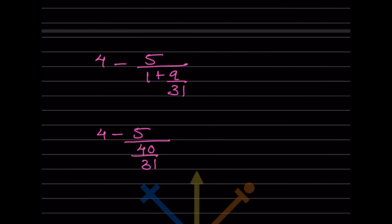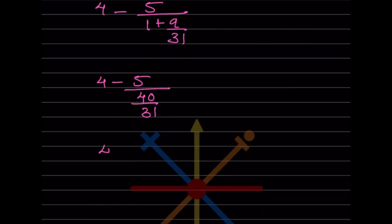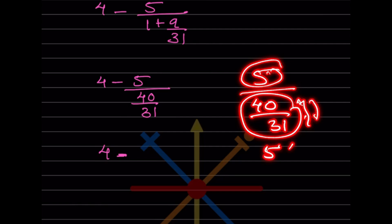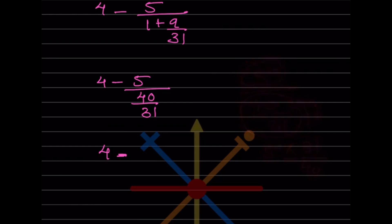We now look at this part — 4 is going to be the same. So 4 minus... and we write 5 divided by 40/31. Since 5 is in the numerator and 40/31 is in the denominator, we flip it: 5 multiplied by 31/40. We write 5 times 31/40.